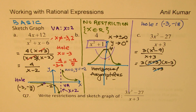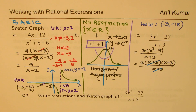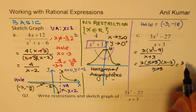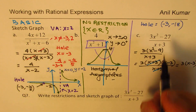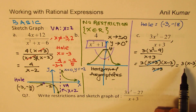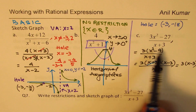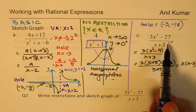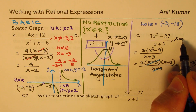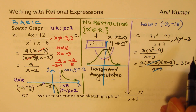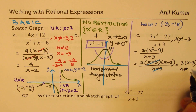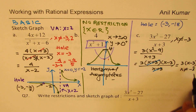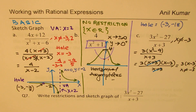We can rewrite the simplified expression as 3(x - 3), which is just a linear expression. But is this equal to the original? No — you must write the restriction: x ≠ -3, because we have a hole there. So the restriction is x ≠ -3.